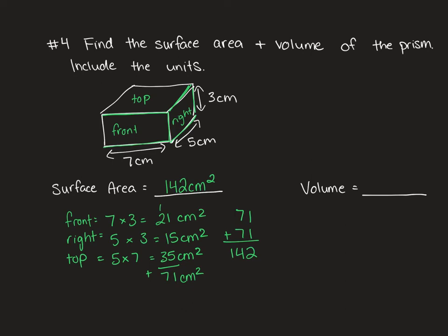How would I find the volume of this rectangular prism? To find the volume, it's the area of the base times height. So to find the area of the base, we need to do 7 times 5, and then multiply that by the height, which is 3. So that's 35 times 3, which gives us 105. So my volume is 105 centimeters cubed, because it is volume. So always check, surface area is squared, volume is cubed.